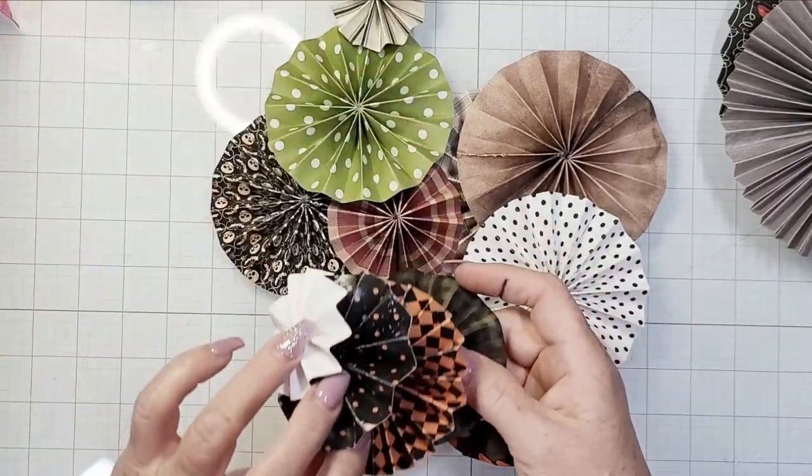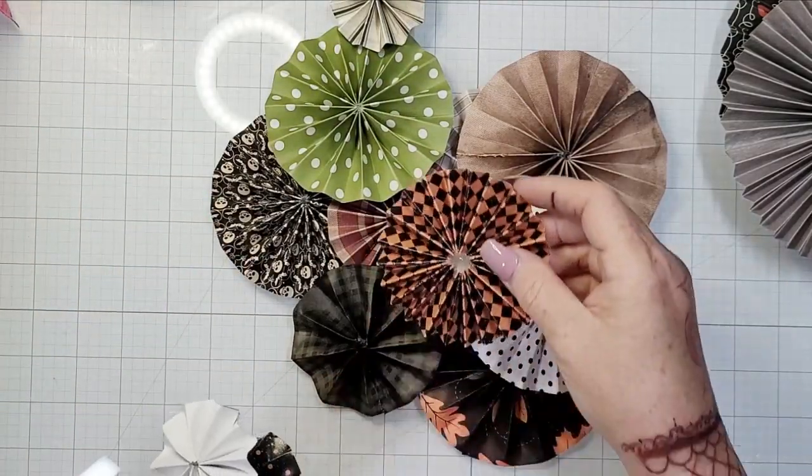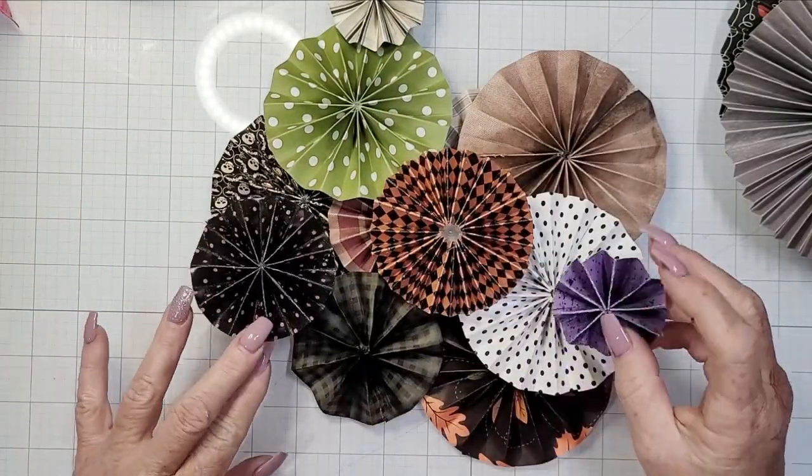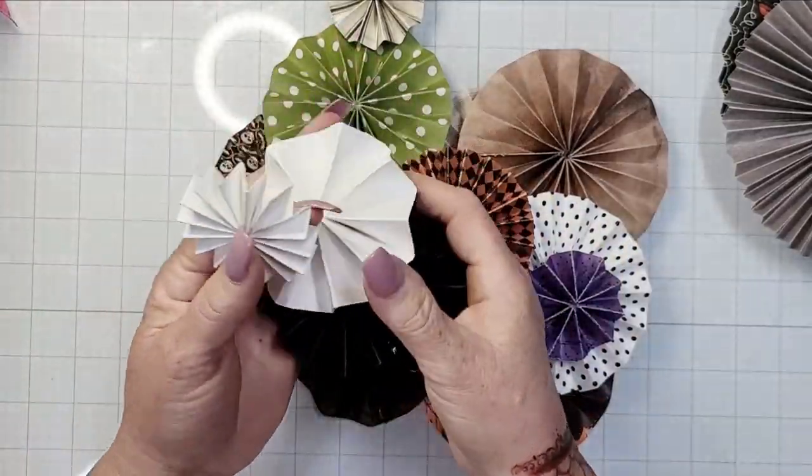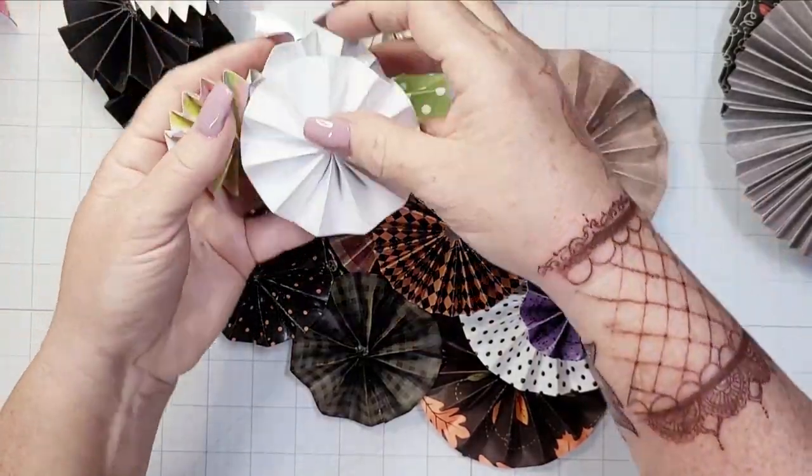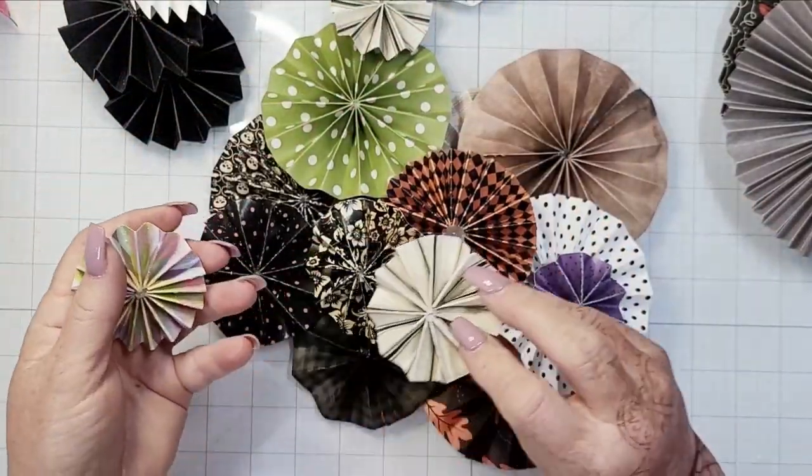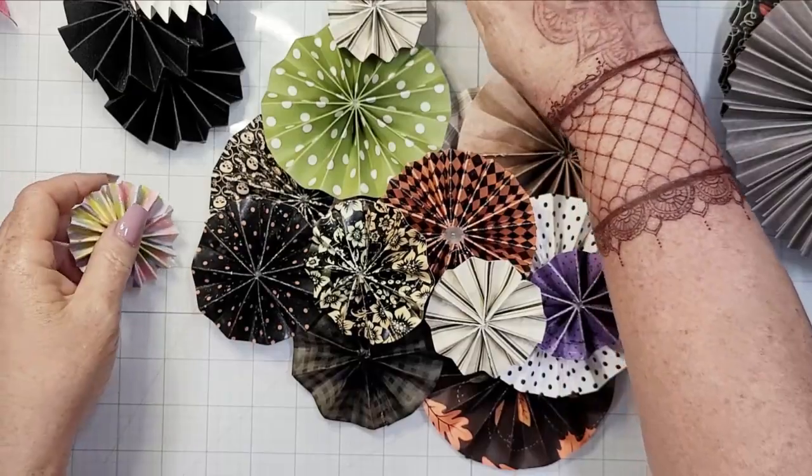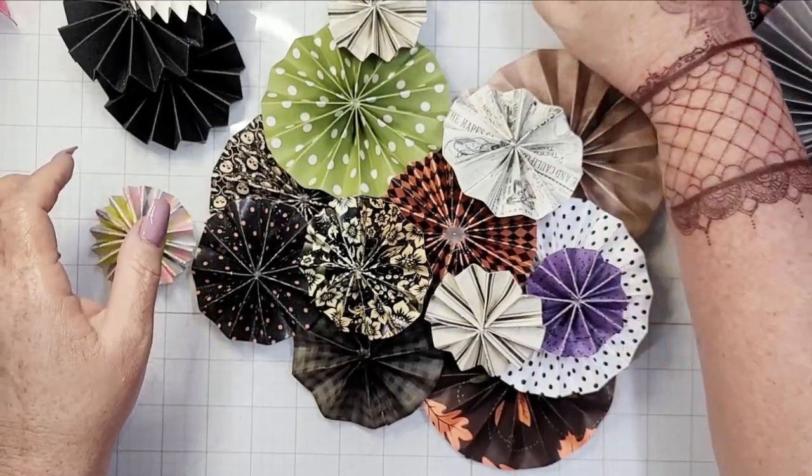The options are endless. There's so many things you can do in terms of adding trims or washi tape. You can do danglies on these. I've made some that are just half the rosette, so it can be a collar or a bunting like that white one in the middle.